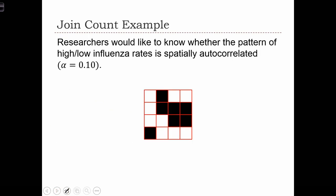So let's conduct a joint count statistic from scratch. Researchers would like to know whether the pattern of high and low influenza rates is spatially autocorrelated. In this case, the white cells are low levels of influenza, and the black cells are high levels of influenza. Let's do this with the level of significance of 10%.